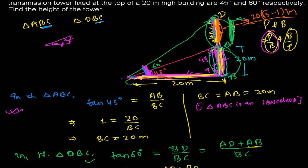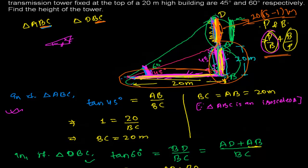So we found the height AD = 20(√3 - 1) meters. To summarize: first identify the two right-angle triangles and find what is common — here the base BC. Find the common element first using the smaller triangle, then apply it to the bigger triangle. Also know which ratio to use — it depends on what you have and what you need to find. Here perpendicular and base were involved, so we used tan. Try to solve more problems. See you in the next video, goodbye.